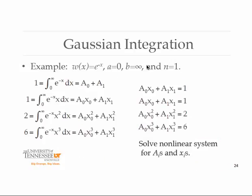As indicated in the next slide, suppose the weighting function is e to the minus x and we're integrating from 0 to infinity, and we choose n equals 1. In this case, we only have two abscissas. If we're zero-indexing, n equals 1 means two abscissas; if n equals 2, you'd have 3. So the rule then has to be exact up to a certain number of powers of x.